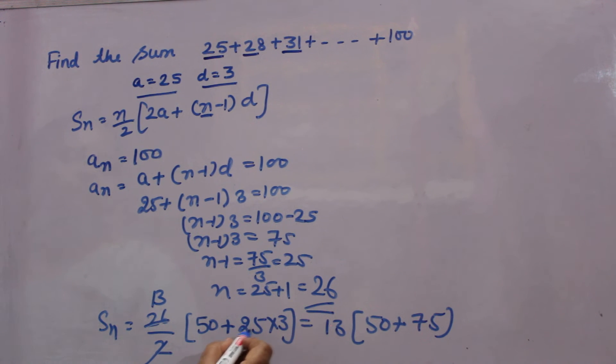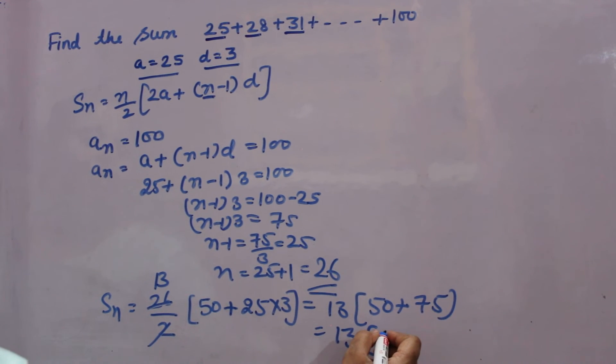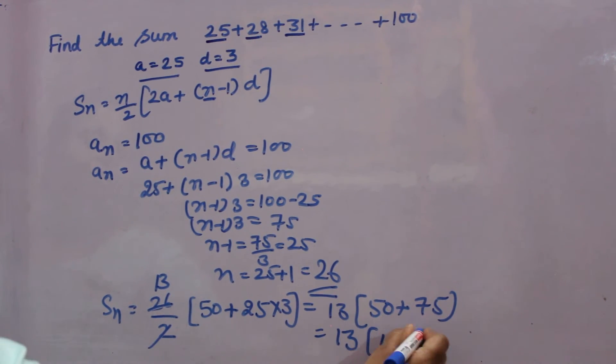Phele here peh board mass rule se phele multiply karna hai, phir plus karna hai. That means 13 into 15 into 75. That will come 125.